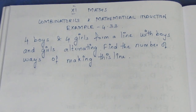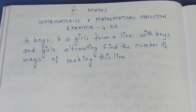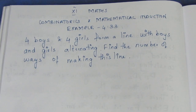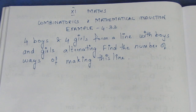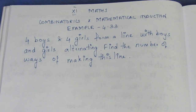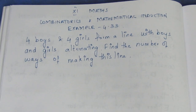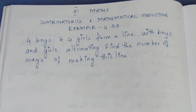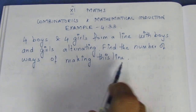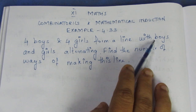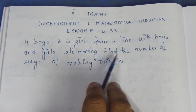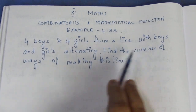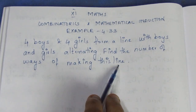Hello viewers, I am Maitli. In the 11th grade, combinatorics and mathematical induction, example 4.33. The question is: 4 boys and 4 girls form a line with boys and girls alternating. Find the number of ways of making this line.